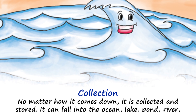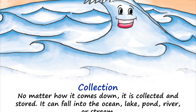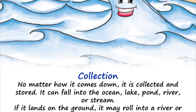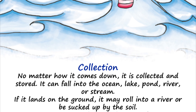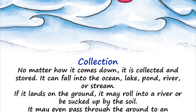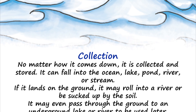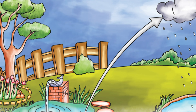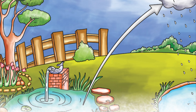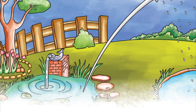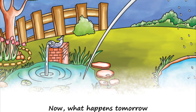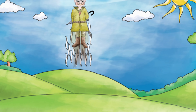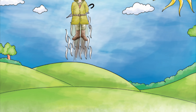Collection: precipitation can fall into the ocean, lake, pond, river, or stream. If it lands on the ground it may roll into a river, or be sucked up by the soil. It may even pass through the ground to an underground lake or river, to be used later. Then when the sun comes out, that's right — the water cycle starts over again.